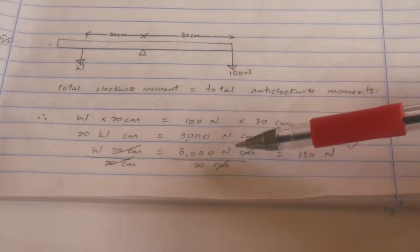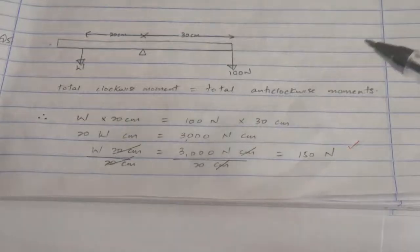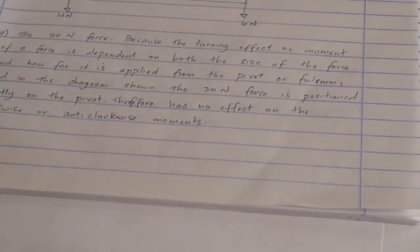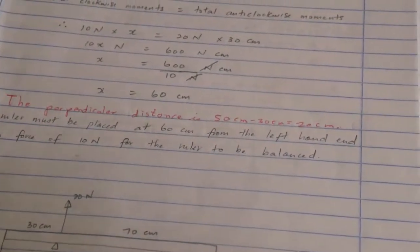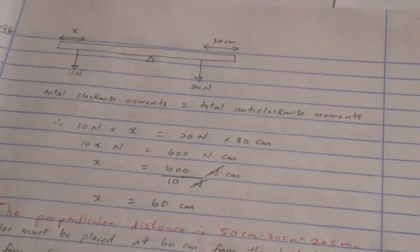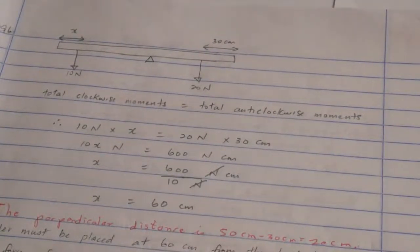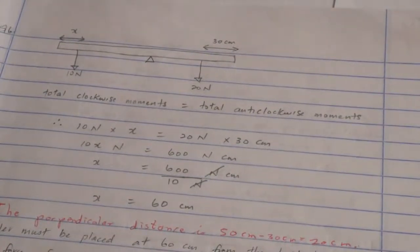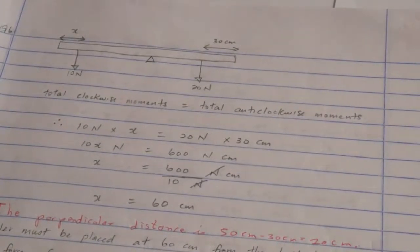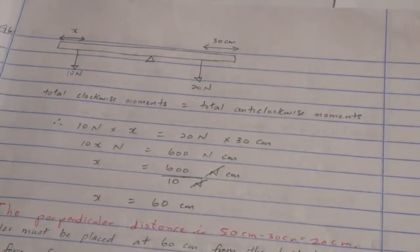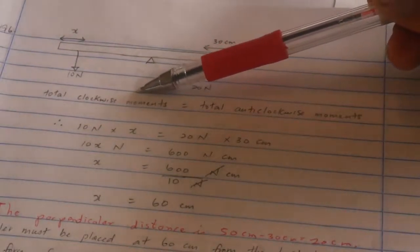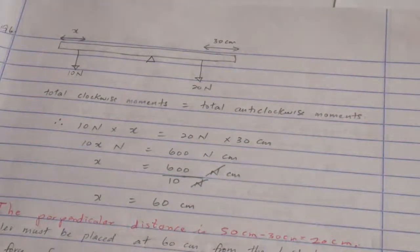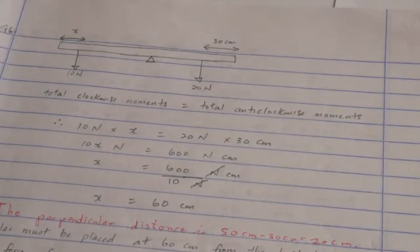So you see the working there gives you, through elimination and substitution, 150 newtons. All right, next question. The diagram shows a one meter ruler pivoted at its midpoint. At what distance x from the left end of the ruler must the 10 newton force be applied to balance the ruler? Once again, because it says ruler is balanced, you see total clockwise moments equal to total anti-clockwise moment.